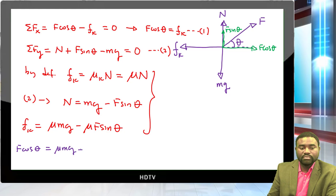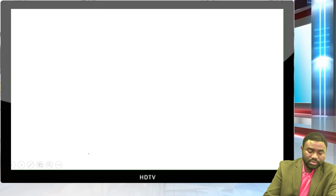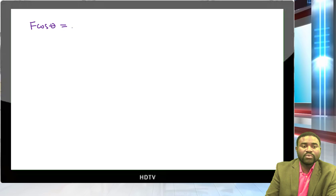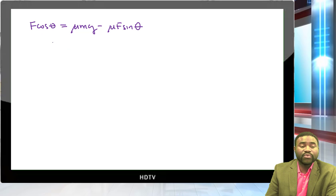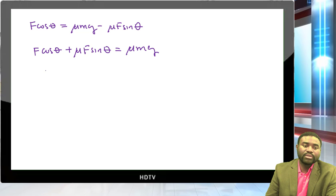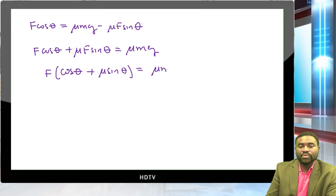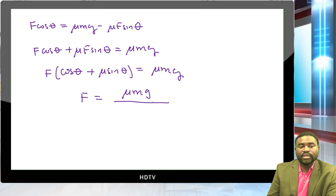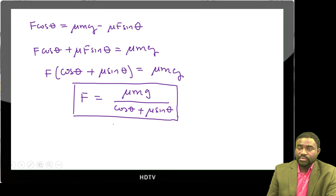Substituting into equation 1: F cosine theta equals mu*mg minus mu*F sine theta. Collecting F terms: F cosine theta plus mu*F sine theta equals mu*mg. Factoring: F*(cosine theta plus mu*sine theta) equals mu*mg. Therefore F equals mu*mg divided by (cosine theta plus mu*sine theta).